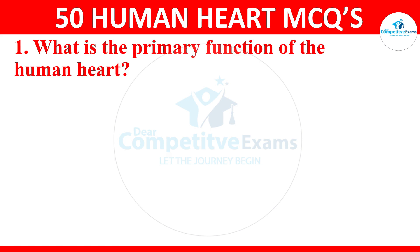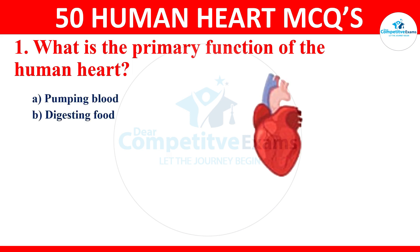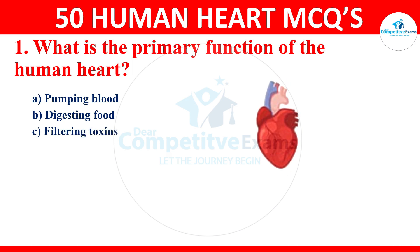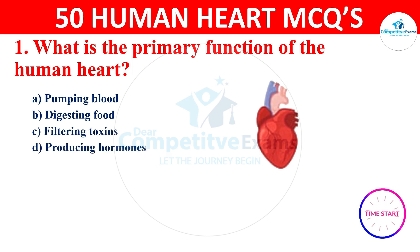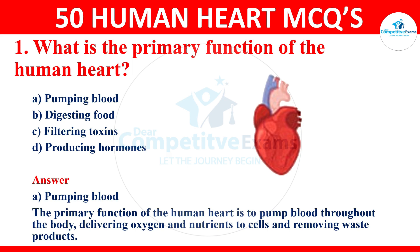The first question: what is the primary function of the human heart? Your options are pumping the blood, digesting food, filtering toxins, or producing heart hormones. The correct answer is pumping blood. The primary function of the human heart is to pump blood throughout the body, delivering oxygen and nutrients to cells and removing waste products.